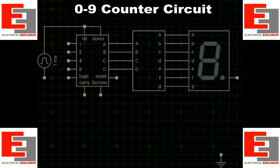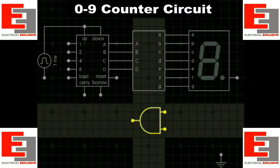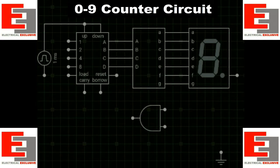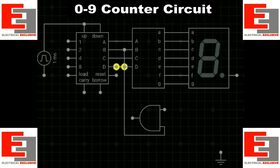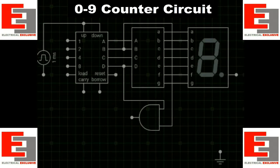The next step is we need an AND gate. We need to supply the AND gate with terminals B and D from the counter. The output of the AND gate should then be connected to the reset terminal of the counter.